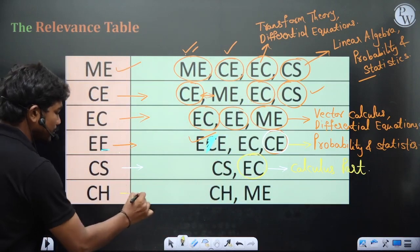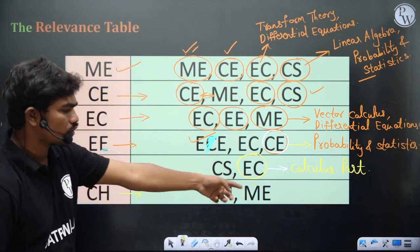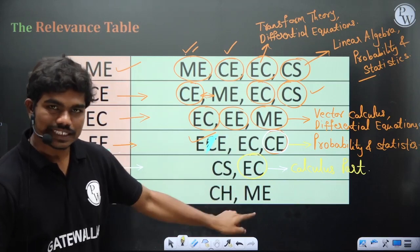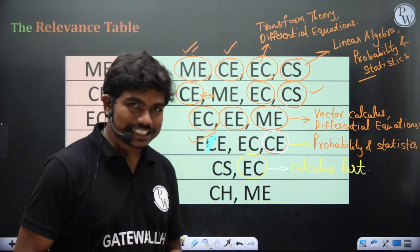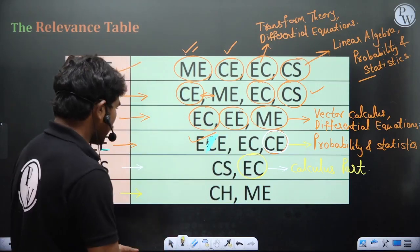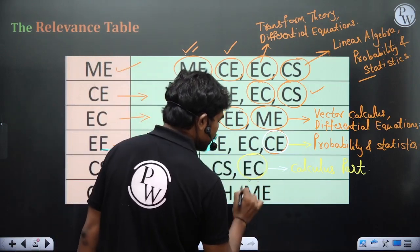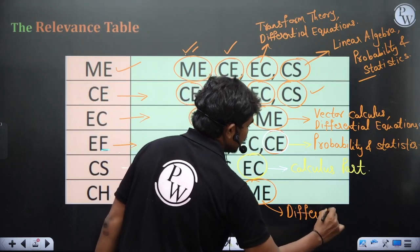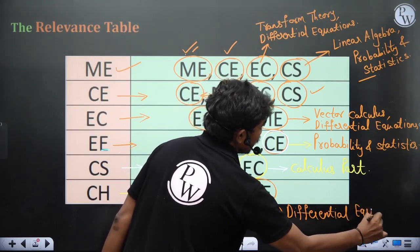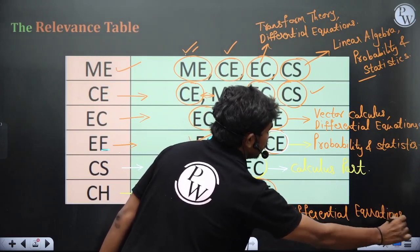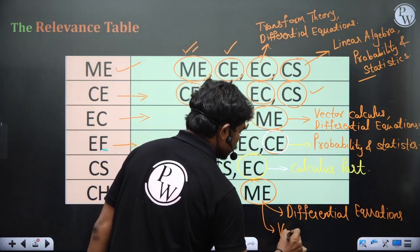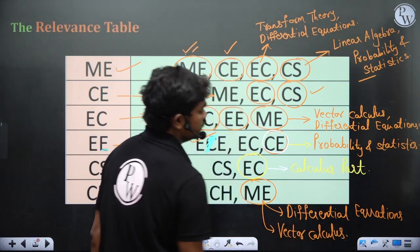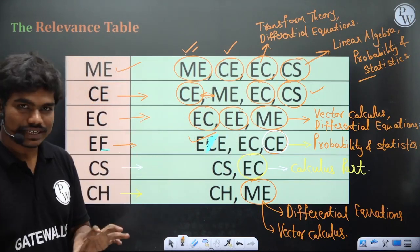Coming to chemical engineering — chemical has strong overlap with both mechanical and civil. The reason I kept mechanical rather than civil is that civil has some additional statistics content not needed for chemical engineering. So use mechanical PYQs for differential equations — both ordinary and partial — and questions from vector calculus can also be very helpful for chemical engineering students.